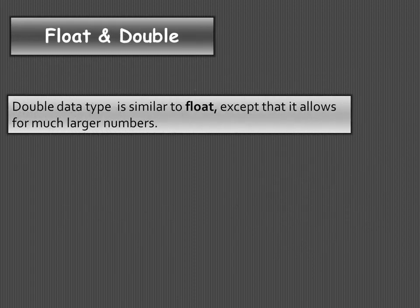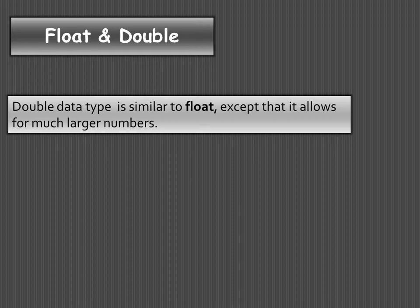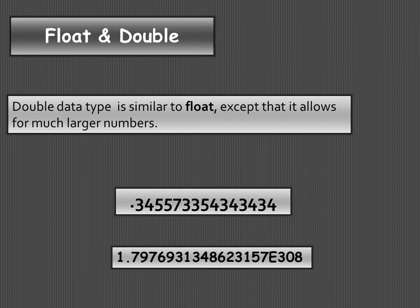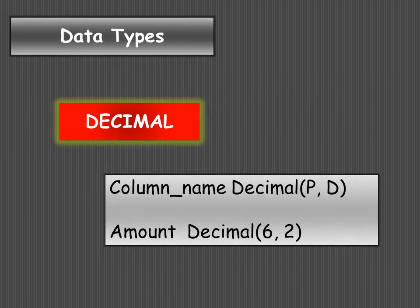FLOAT data type is similar to REAL but can store values with more precision and can store larger numbers. FLOAT data type has 15 digits of precision, meaning it can accurately display 15 digits after the decimal. DOUBLE data type is similar to FLOAT but is used for even larger numbers and provides more precision than FLOAT.